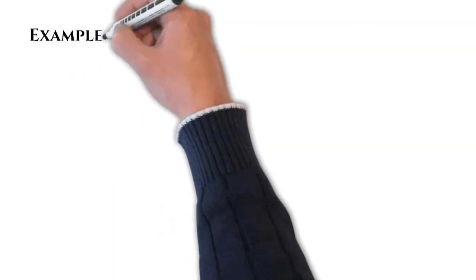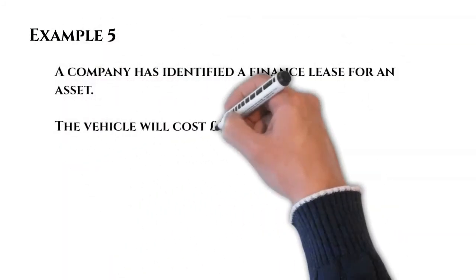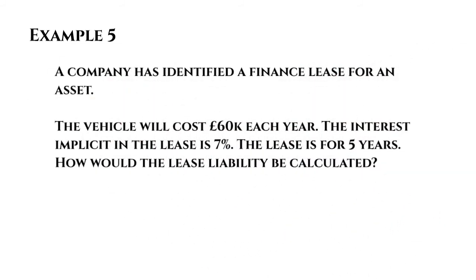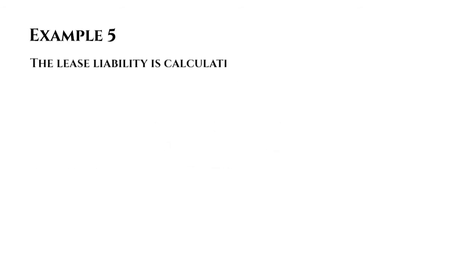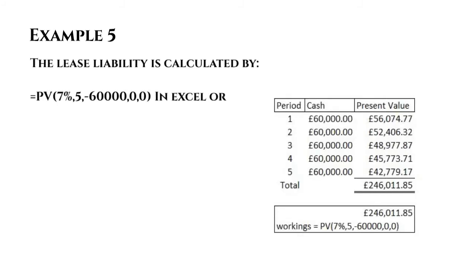Moving on to example five: a company has identified a finance lease for an asset costing £60,000 per year. The interest implicit in the lease is 7% and the lease is for five years. Using the same Excel formula: =PV(7%, 5, -60000, 0, 0), which gives a total liability of £246,011.85. Breaking that down by year, the present values are: £56,074, £52,406, £48,977, £45,773, and £42,779 — which sum back to £246,011.